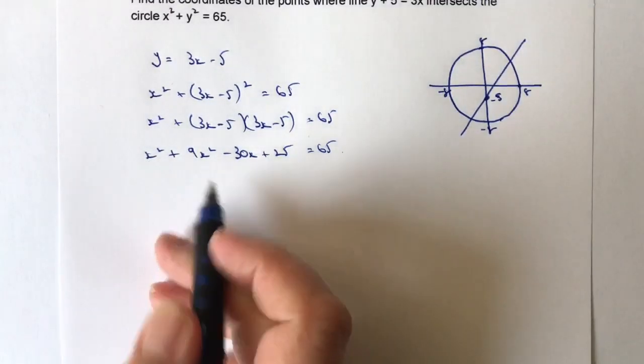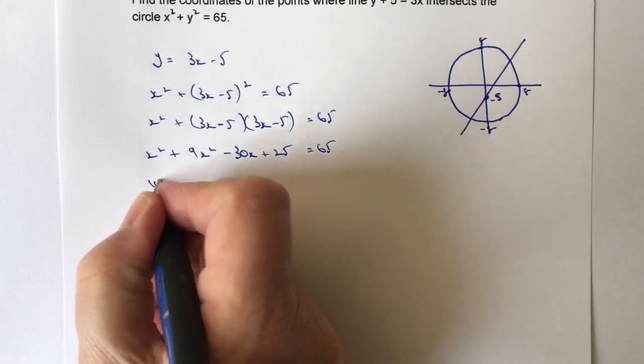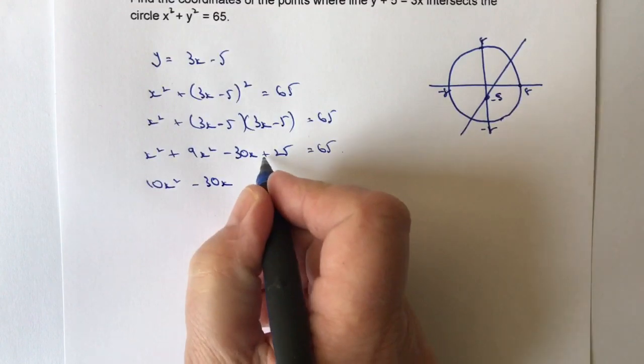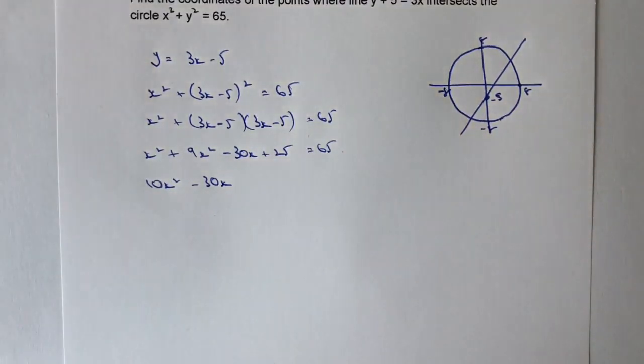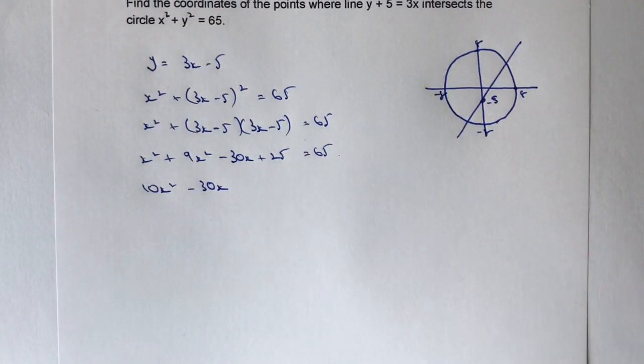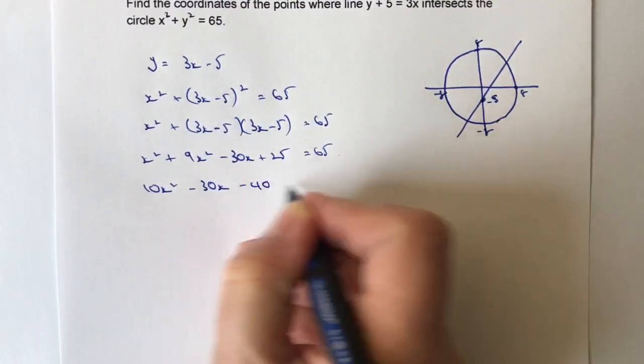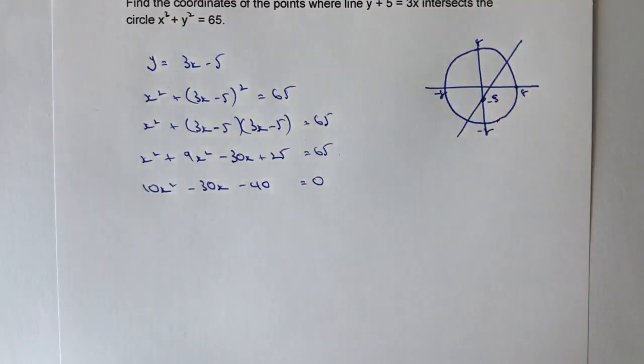So I've got x squared plus 9x squared is 10x squared, minus 30x. And then I've got plus 25 minus 65. So when I'm going to be factorizing this, I need to make it equal to 0. So I bring my 65 over, and that's going to give me minus 40, and that equals 0.